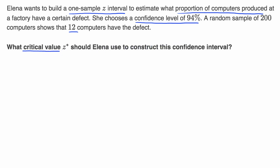Remember, the whole point behind confidence intervals is we have some true population parameter. In this case, it is the proportion of computers that have a defect. There's some true population proportion. We don't know what that is, but we try to estimate it.